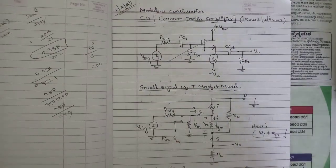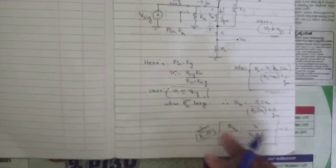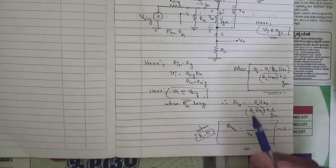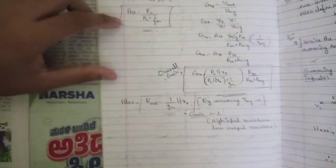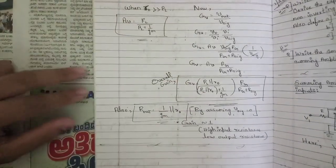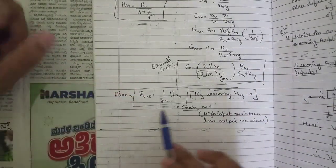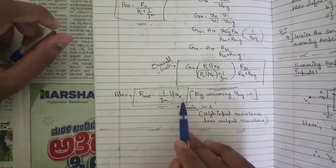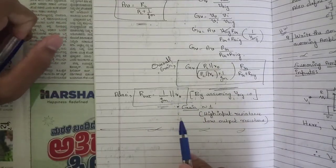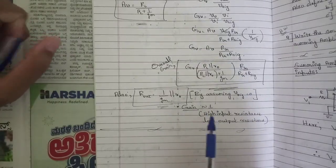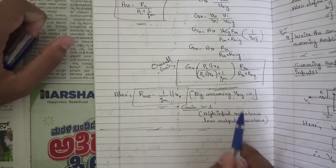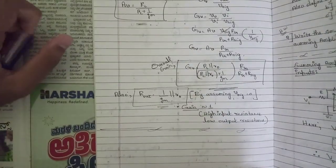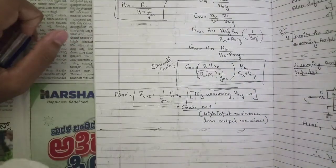For the common drain amplifier, note its circuit with the small-signal T-model and all necessary expressions for overall voltage gain, output voltage, input voltage, and the RG resistance. The output resistance R0 = (1/gm) parallel to R0. By assuming V_signal = 0, the gain is approximately 1, satisfying the condition of high input impedance and low output resistance — note this for the CD amplifier.